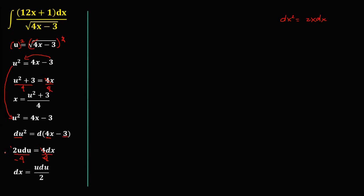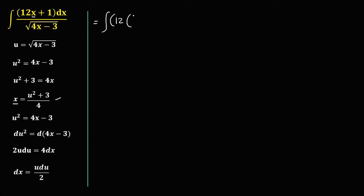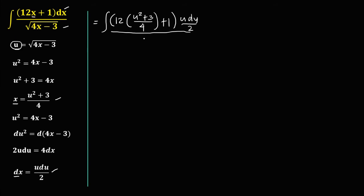Now we can use substitution to solve this integral. We have the integral of 12 times x, and since x equals (u squared plus 3) over 4, that becomes (u squared plus 3) over 4 plus 1. Then times dx, which is u du over 2, all over the square root of 4x minus 3, which equals u, so over u.